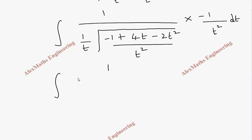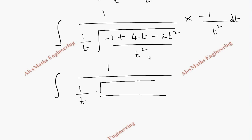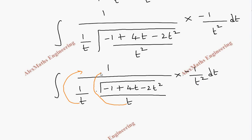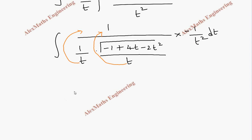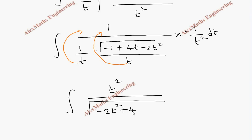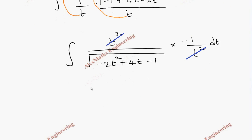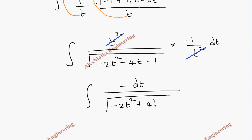Separating the square root for numerator and denominator: √(t²) = t, so we get t in the denominator. Carrying this t and the 1/t factor to the numerator yields t². We then have t² divided by √(−2t² + 4t − 1) times −(1/t²)dt. Canceling t², we are finally left with the integral of −dt / √(−2t² + 4t − 1).